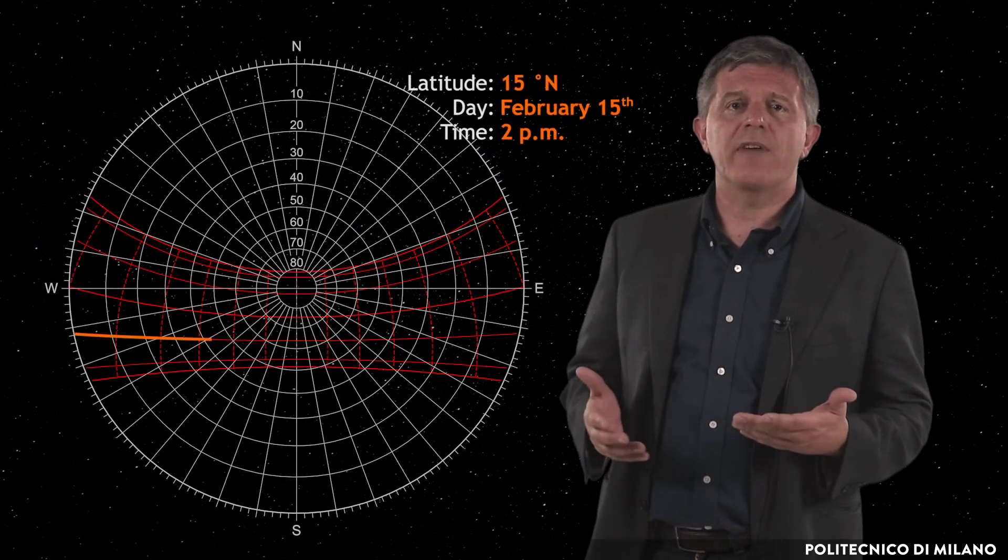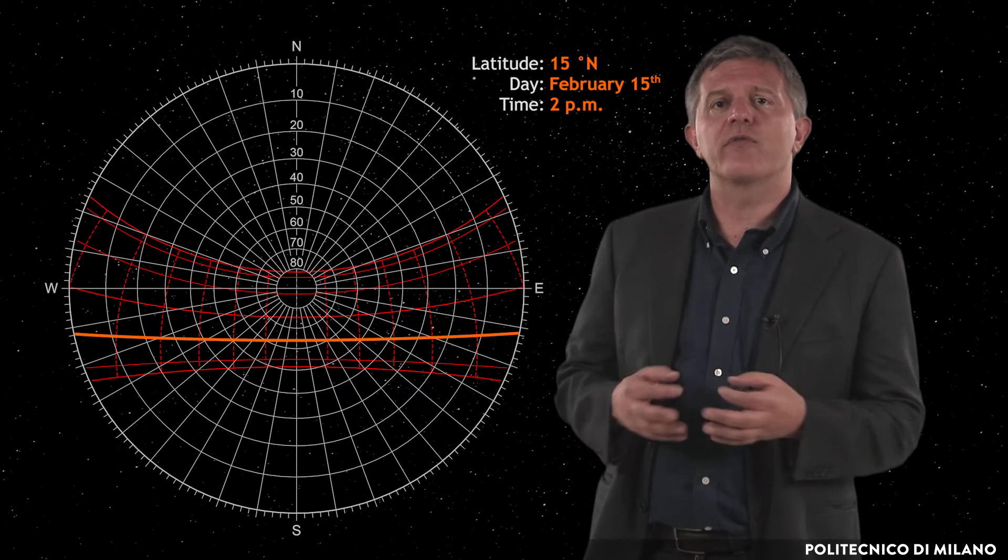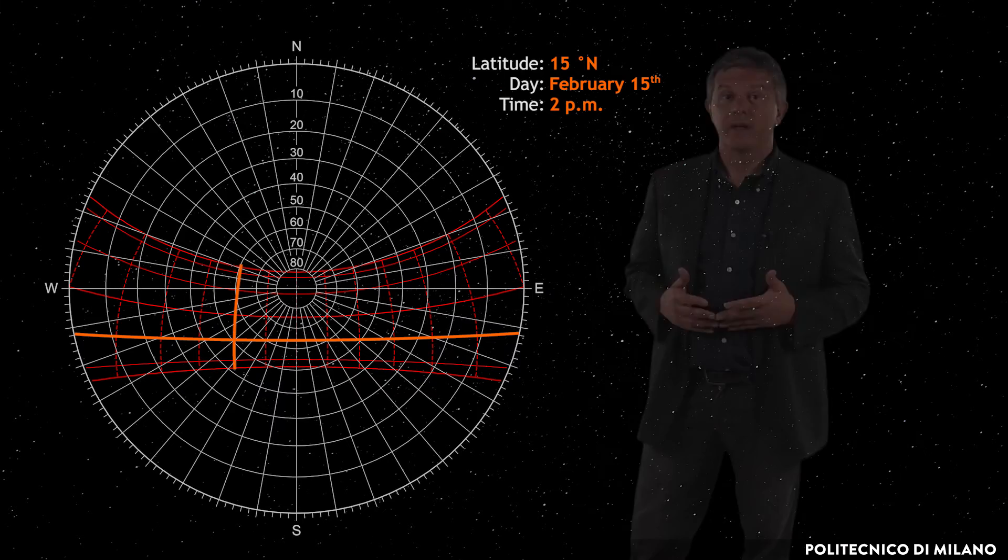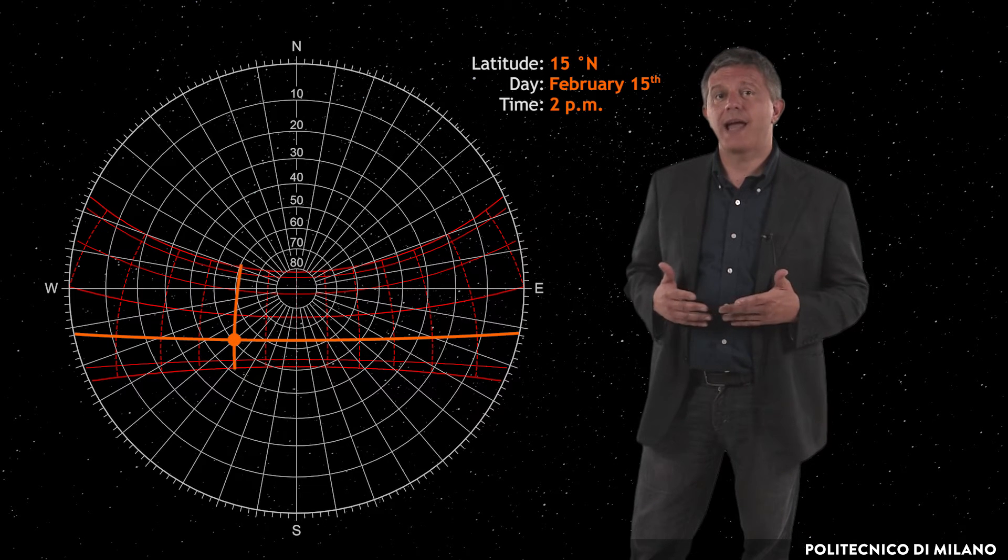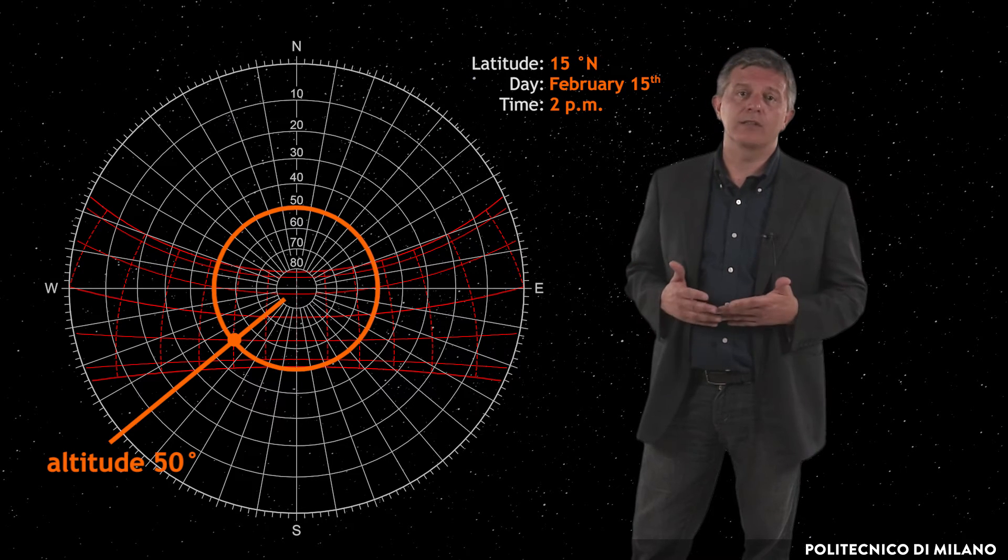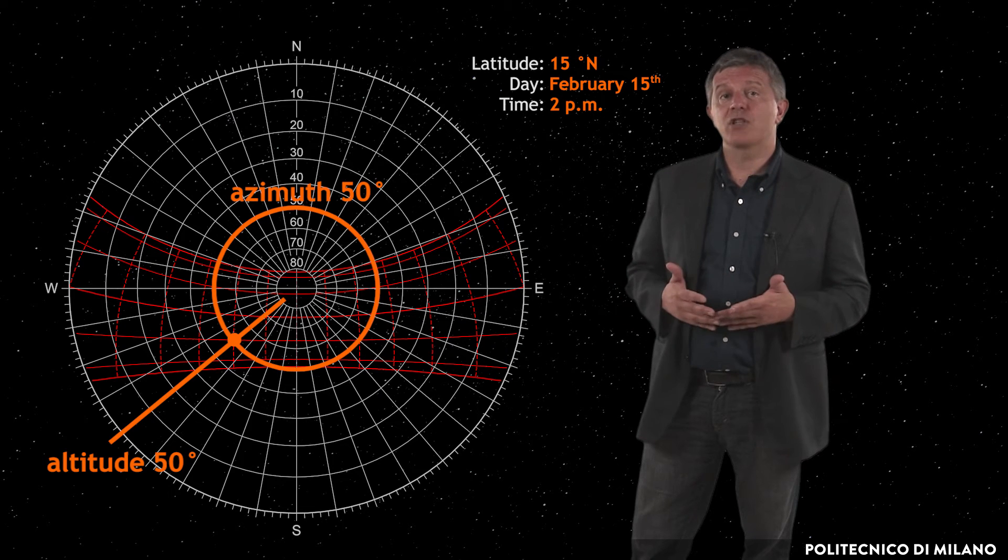Firstly, we identify the line corresponding to the month of February and the one corresponding to 2 pm. Then we find the point where the lines cross. The circle and the radius passing through that point respectively indicate the solar altitude and azimuth values. If they are not exactly matching the point, the value is obtained by approximation.